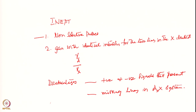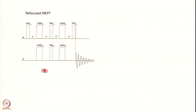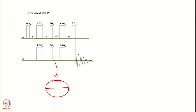To get over this problem, one more technique came into existence called Refocused INEPT. Refocused INEPT is the same as INEPT up to the point where X magnetization is created, and then another block is introduced: a tau period — tau dash, which in the simplest case equals tau. At this point, if I draw the X transitions, they were along the X or Y axis — two transitions oriented in opposite directions. Such a signal is called antiphase magnetization, because the two transitions have opposite phases.